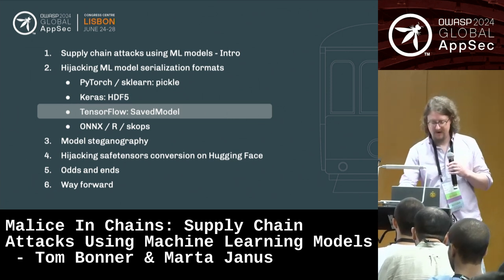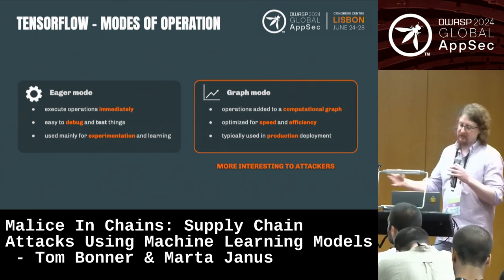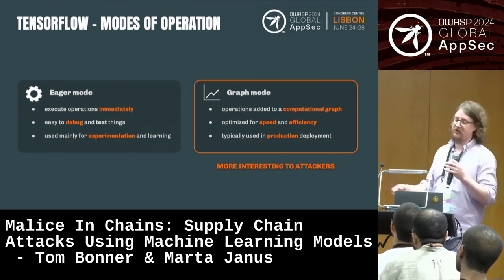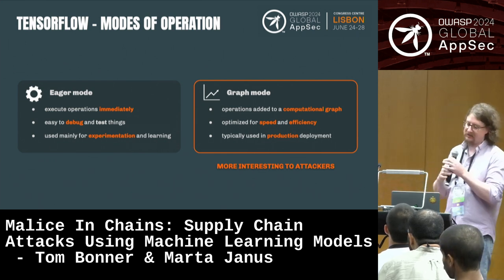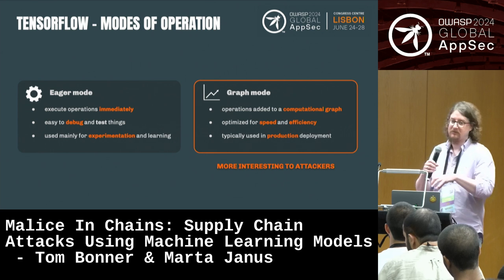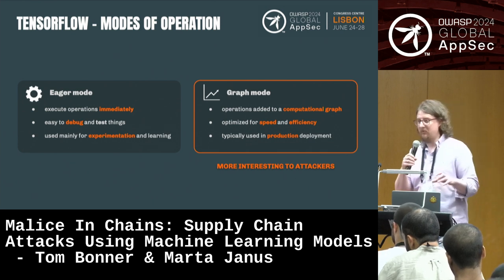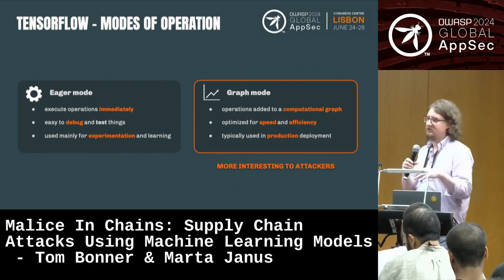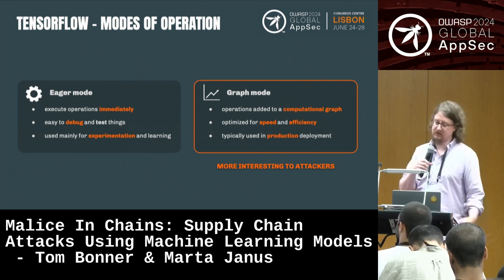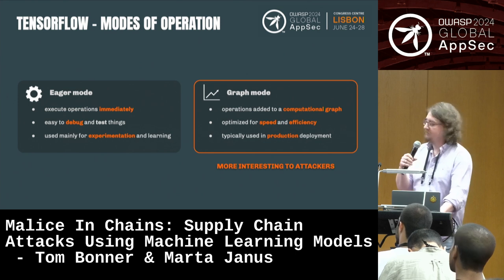Now TensorFlow — an interesting one. It has two modes of operation. In eager mode, it executes operations immediately, and you can embed Python functions into your neural network to help debug things — look at inputs and outputs to layers, check activations. However, you cannot serialize those Python functions to disk, so there's no way to do Python code execution through TensorFlow that way. However, in graph mode — which is how TensorFlow models are serialized — they're saved as a protobuf storing a computational graph. It's optimized for speed and efficiency, highly portable, and used primarily in production environments. The SavedModel itself is a protobuf; there's no way to embed executable arbitrary code in it.